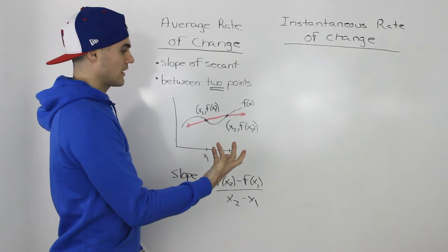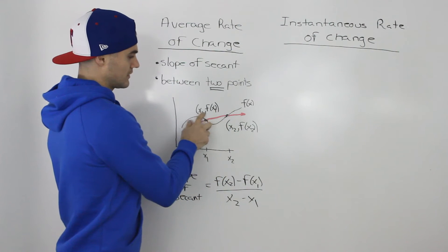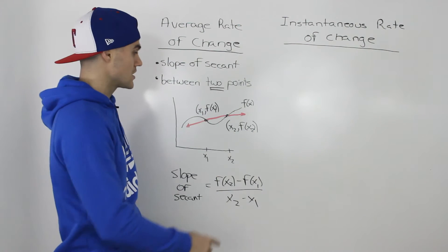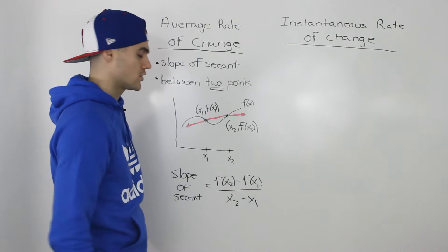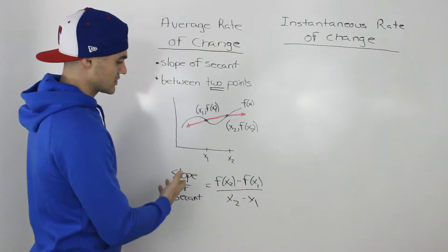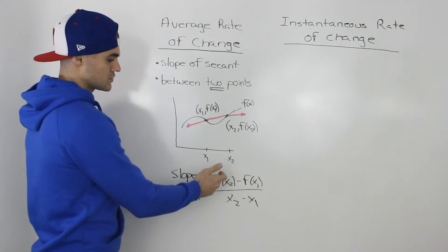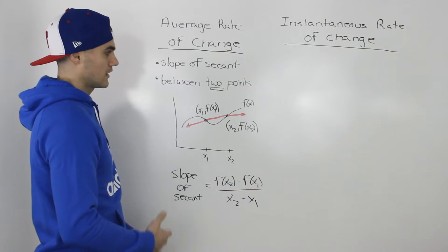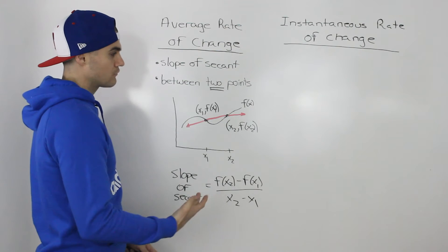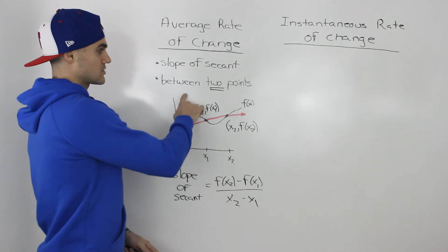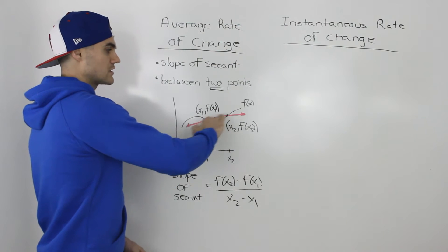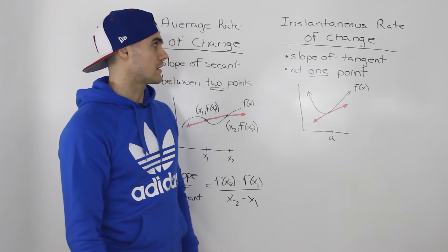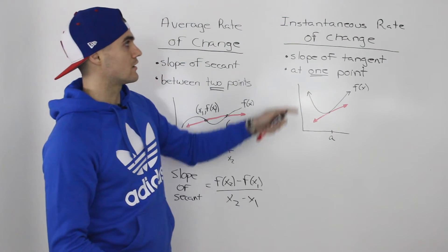Usually for f(x) you're going to be given some equation, so to find the y-values you just plug in x1 and x2 into the function. I'm using f(x1) and f(x2) for notation. To find the slope between those two points, you just do y2 minus y1 over x2 minus x1. Whenever they're asking for an average rate of change, you know it's between two points and you find the slope of that secant using this formula.